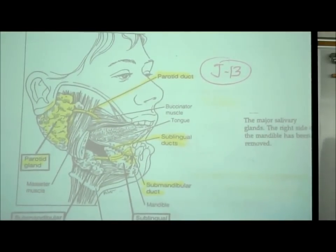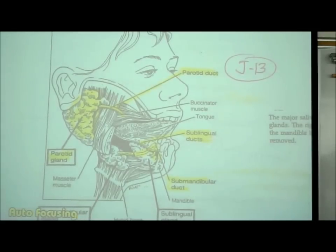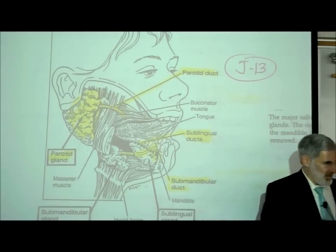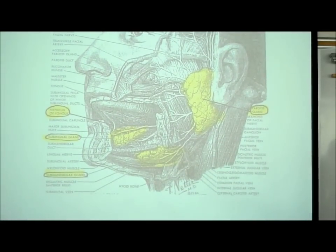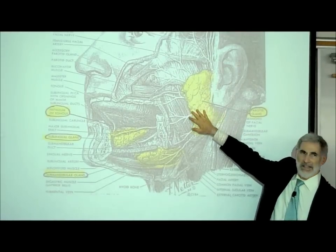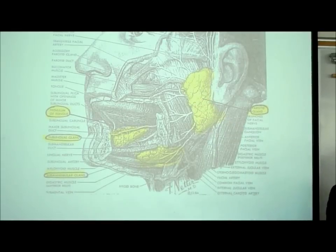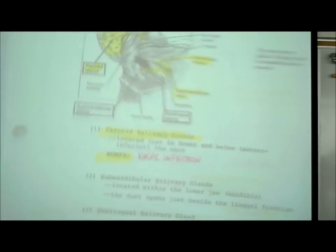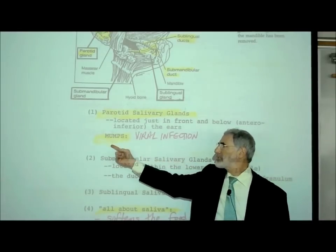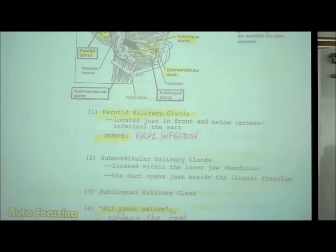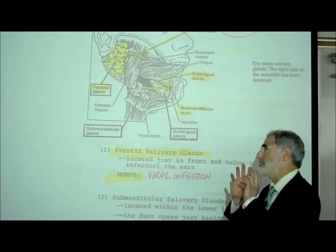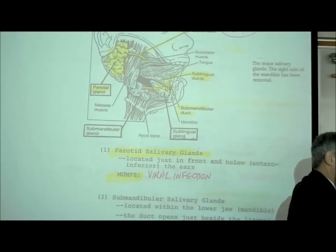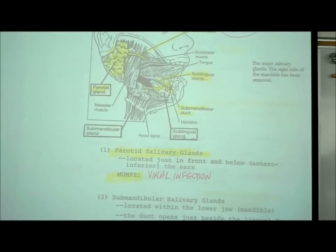On J13, the salivary glands. Just as you have three sets of tonsils, you have three sets of salivary glands. The largest are the parotid salivary glands, located right below the ear. Mumps is a viral infection of the parotid salivary glands, causing them to become enlarged on one or both sides of the face.